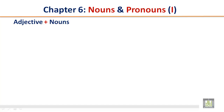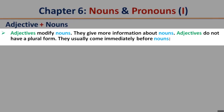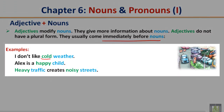Adjective plus nouns. Adjectives modify nouns — they give more information about nouns. Adjectives do not have a plural form; they usually come immediately before nouns. For example: I don't like cold weather — 'cold' is the adjective. Alex is a happy child — 'happy' is the adjective.